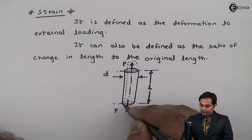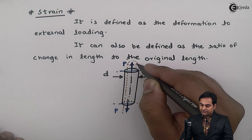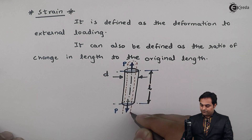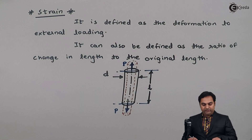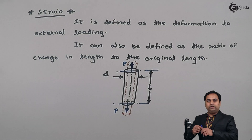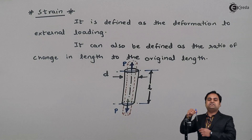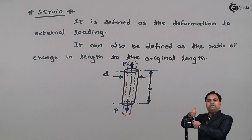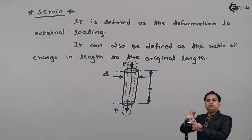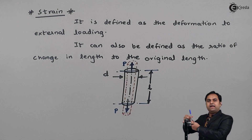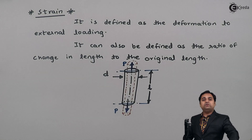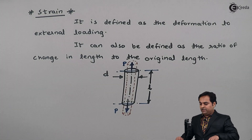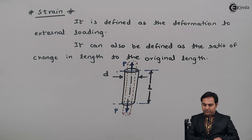The length of the rod will go on increasing. I can take this pen as an example - if I am pulling this pen, then the length of the pen will go on increasing and its diameter will go on decreasing. This physical deformation which we see in an object is called strain.